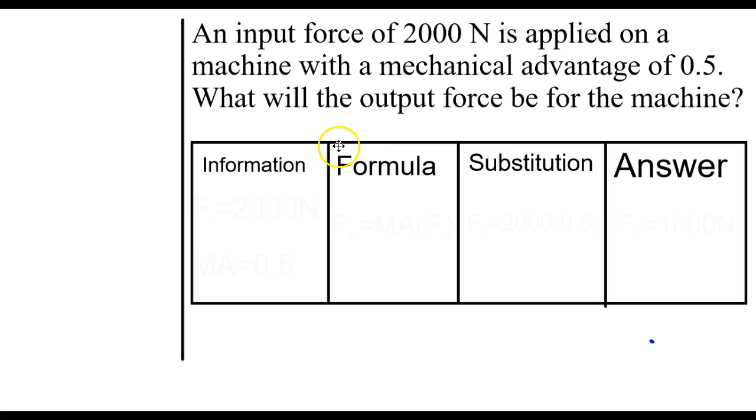Let's take a look at a second example. An input force of 2,000 newtons is applied on a machine with a mechanical advantage of 0.5. What will the output force be? Again, this one spells things out for us. We've got 2,000 newtons and 0.5, and we're finding the output force.